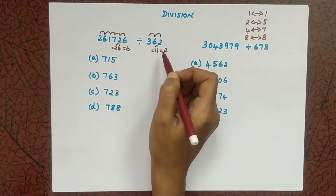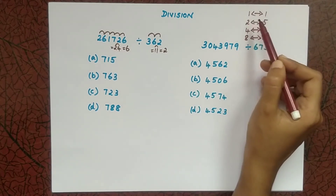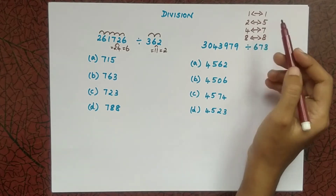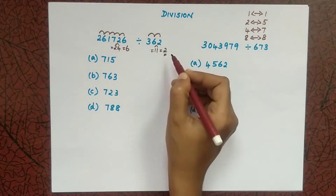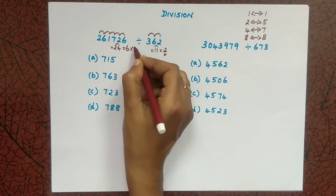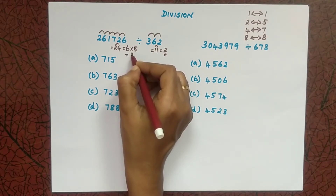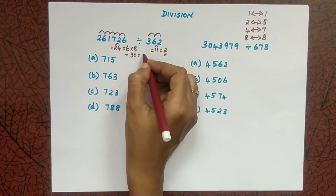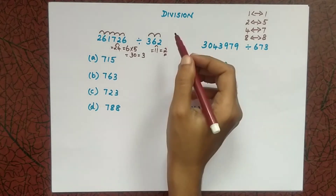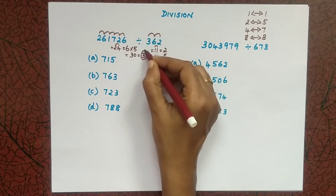Now we have single digit numbers on both sides. Here is the rule: if you get 1, consider 2; if you get 2, consider 5; for 4, consider 7; for 8, consider 8. We got 2 on the divisor side, so we consider 5. We multiply 5 by the dividend digit 6: 6 times 5 is 30. Simplify: 3 plus 0 is 3. So the target number for this question is 3.